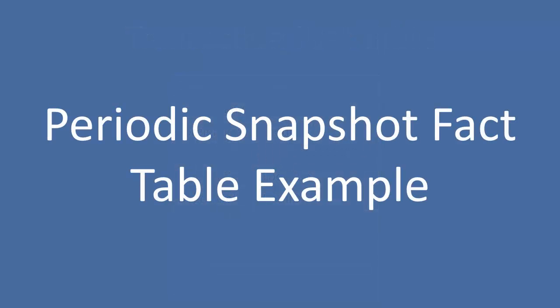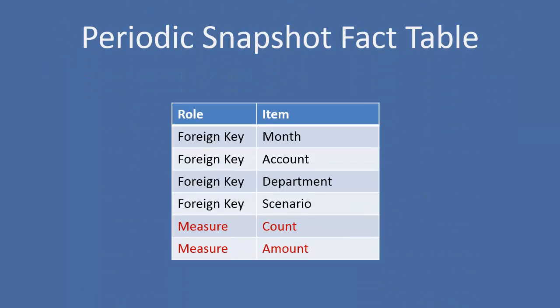The periodic snapshot fact table is slightly different. Instead of including every single transaction in our fact table, we're bringing it up one level, and that one level is across time. So in this case, give me my account balances at the monthly level. I've got a foreign key on month, which is my date dimension. I have an account, an apartment, and a scenario.